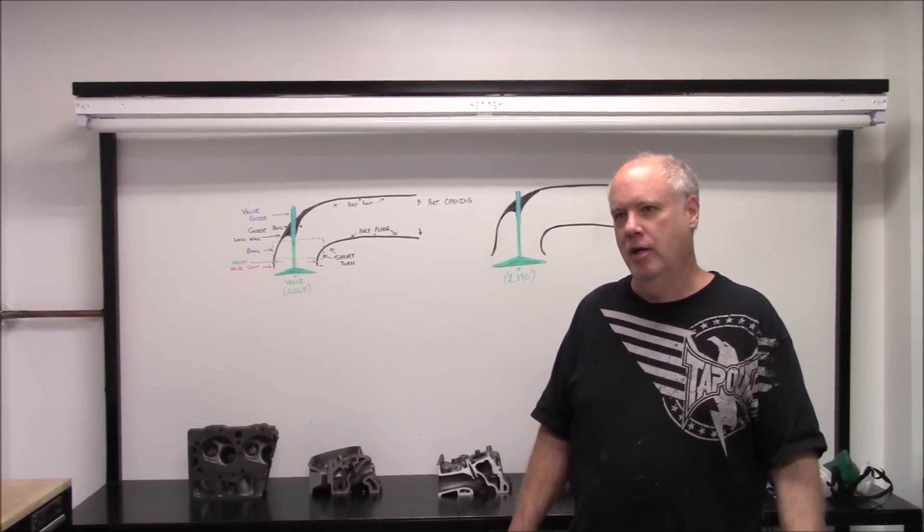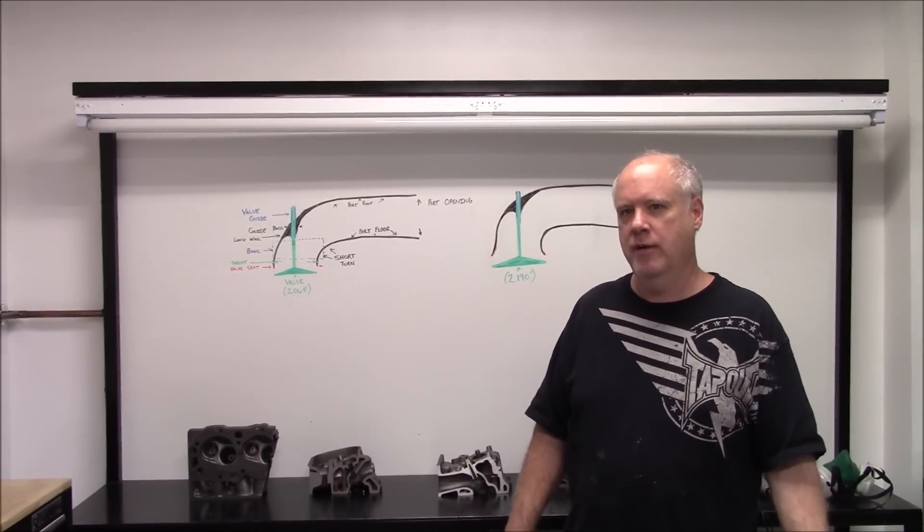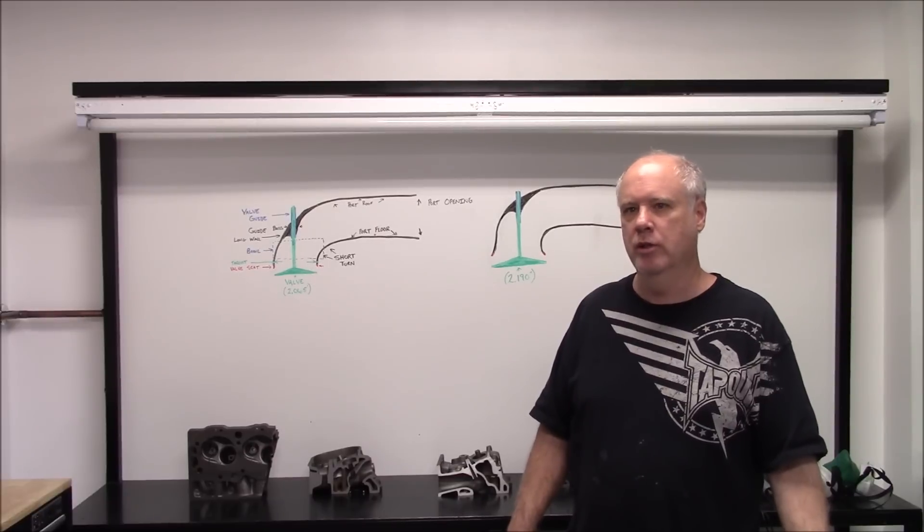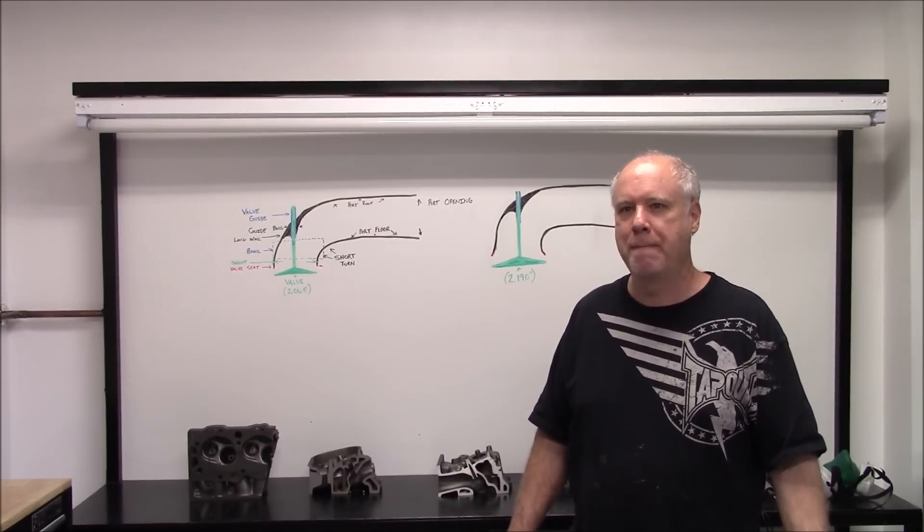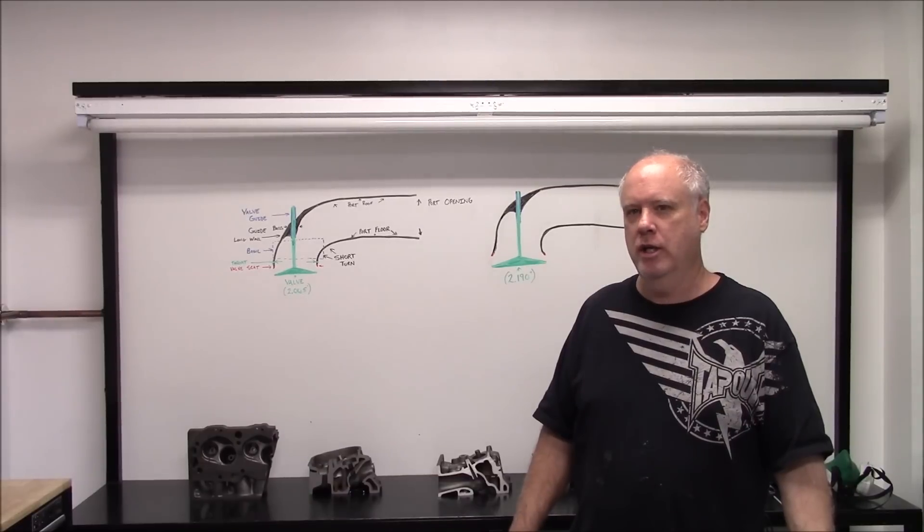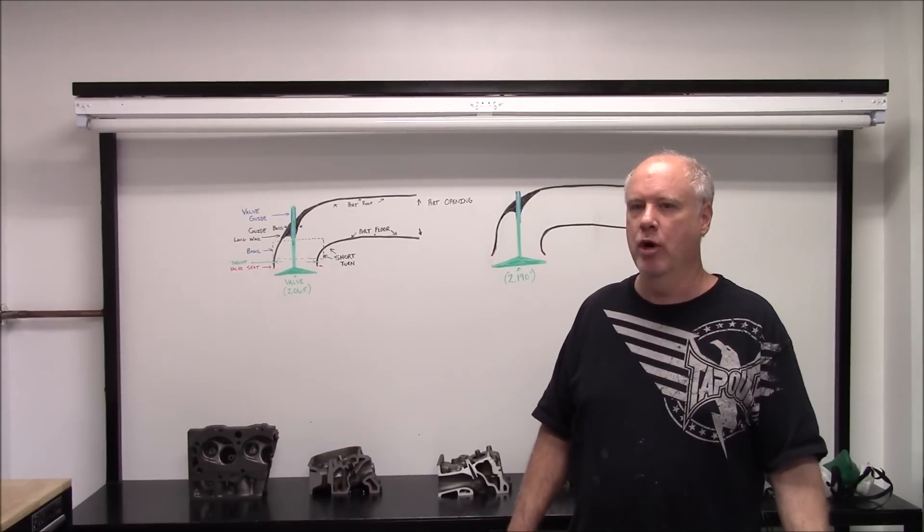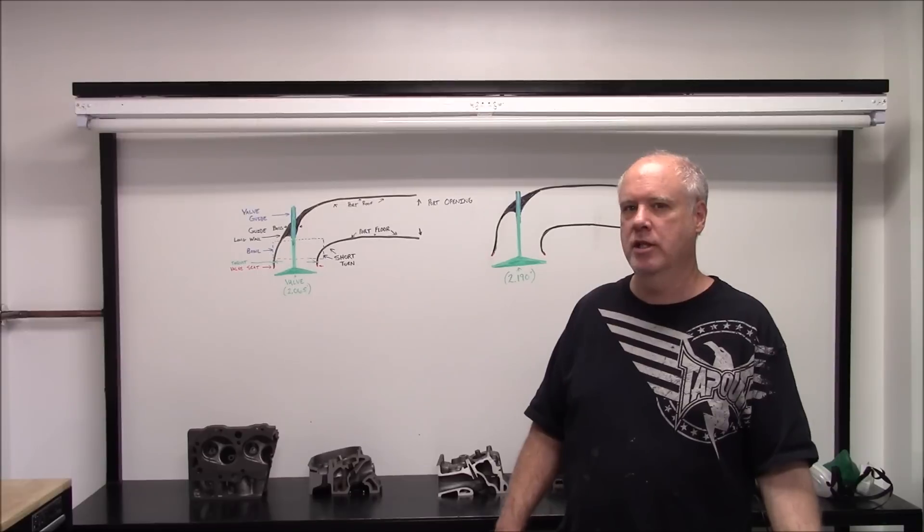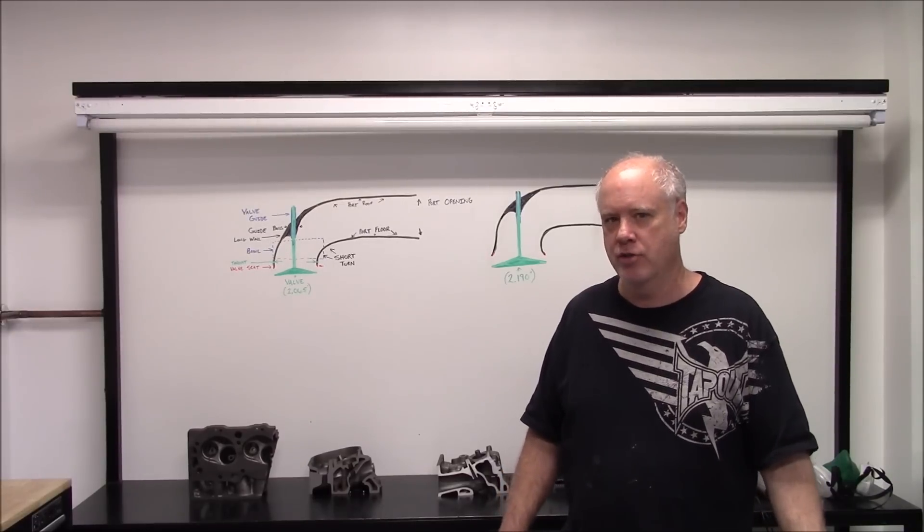Mark from Vortec Pro. We're back on the 467, 620 horsepower engine build. This is video number 21. Today we're going to get into the terminology of the port because we're going to get to the porting of these cylinder heads for this engine.